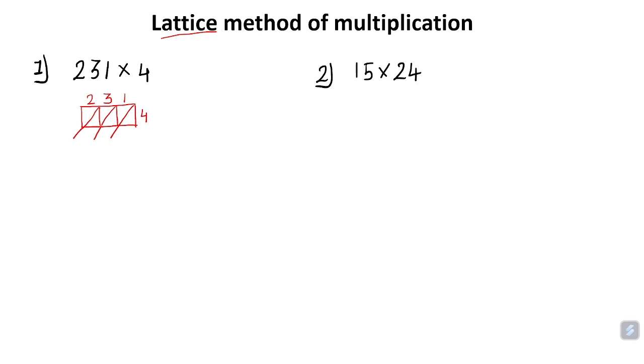Now I'll write in the box above 2 and beside 4. I multiply these two: 2 × 4 = 8. Since it's only one digit, I write 0 in the top part and 8 in the bottom. Then 3 × 4, three fours